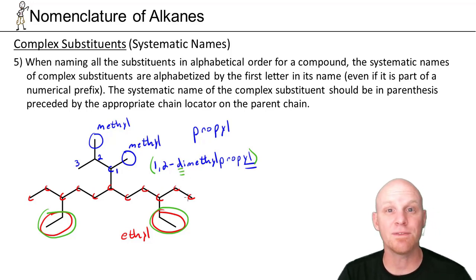And whatever the first letter is, it's going to get alphabetized by even if it's like part of di, tri, tetra. Normally we wouldn't do this with normal substituents. But for complex, the first letter in the name of the complex substituent, that's how it's alphabetized for the systematic way. So in this case, we've got to name this. And dimethyl propyl, being alphabetized under D, comes before ethyl in the alphabet.